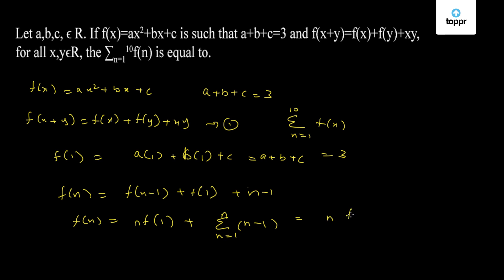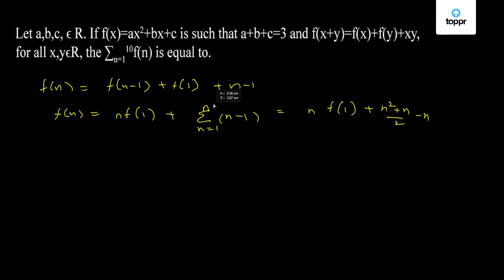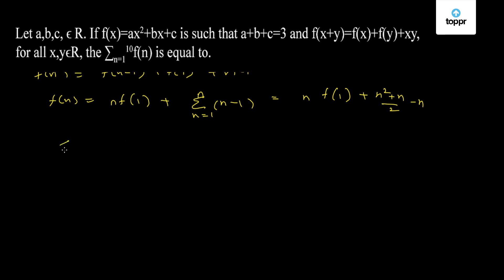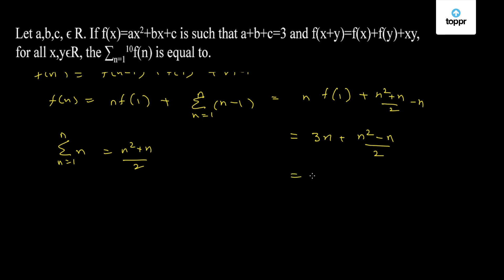This comes out to be n·f(1) = 3n, plus (n² + n)/2 minus n, since summation of n from 1 to n is given by (n² + n)/2. So this value comes out to be 3n + (n² − n)/2.